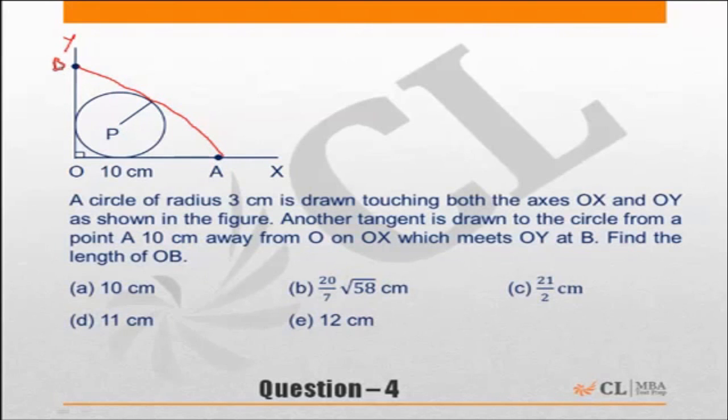I need to find the length OB. Now we have a circle of radius 3 centimeters, that means this is 3, this is 3, and this will be a right angle.